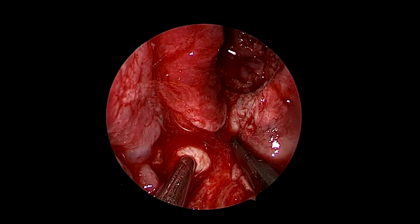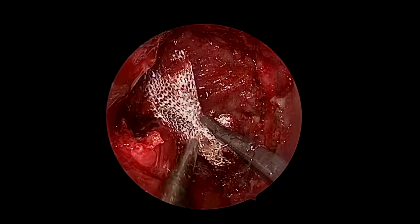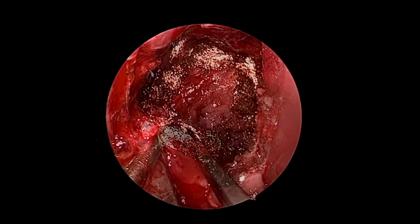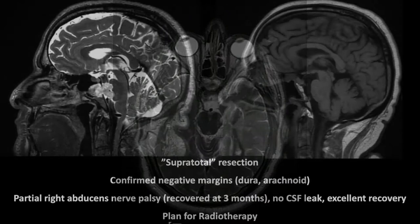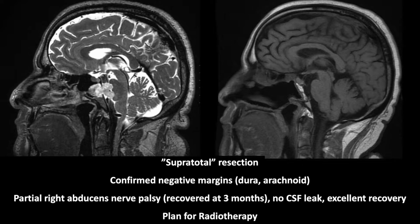We use ICG to confirm that there is good vascular supply on the pedicle of the flap, which is key for a successful reconstruction. We secure the septal flap with layers of Surgicel, framing the contour of the nasoseptal flap. This is the post-operative MRI at three months — the patient had a supra-total resection with confirmed negative margins. He developed a partial 6th nerve palsy that has completely recovered at three months, with no other complications, excellent recovery, and plans for radiotherapy. Thank you.